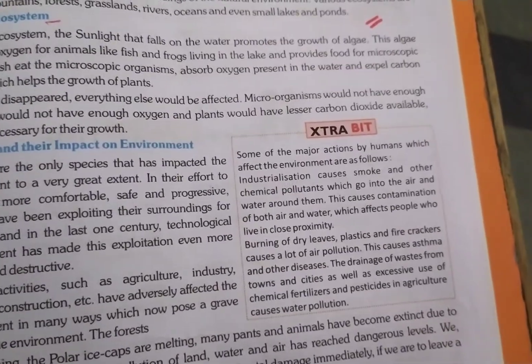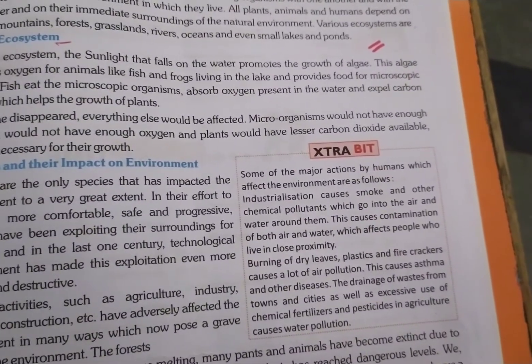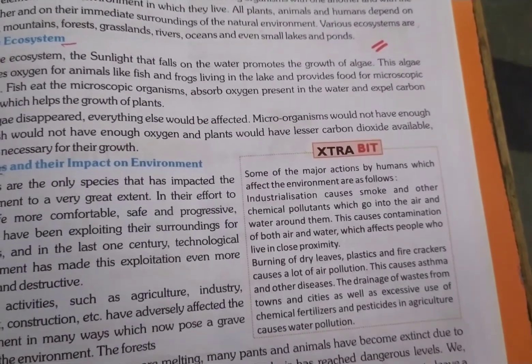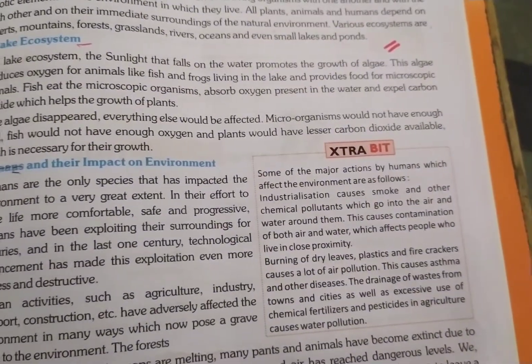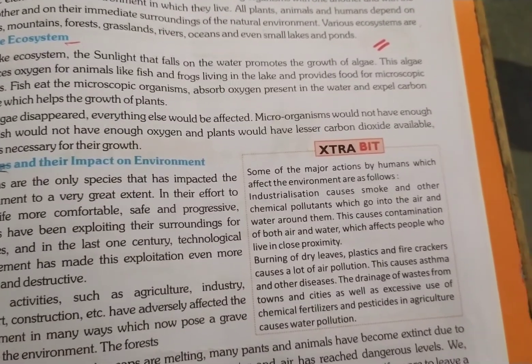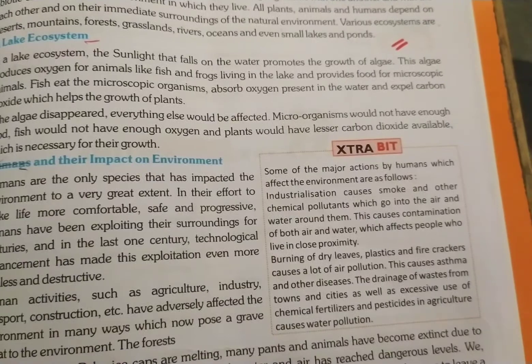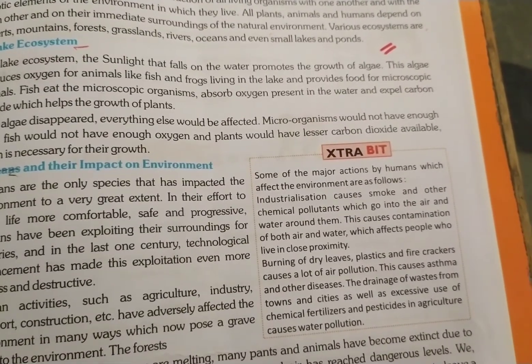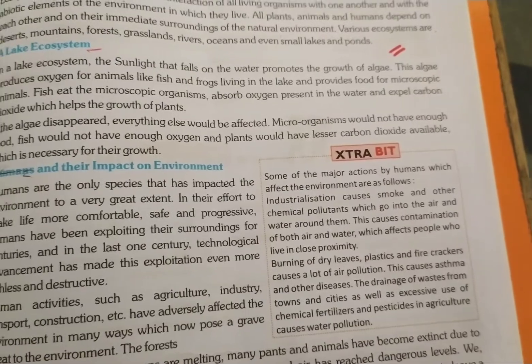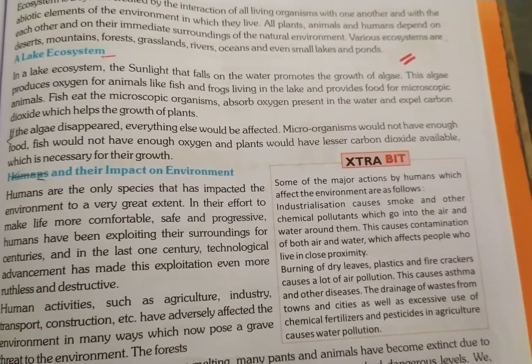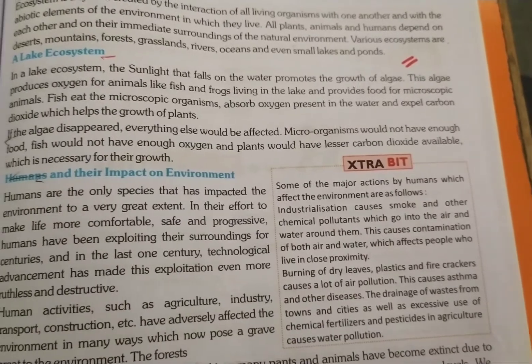A lake ecosystem. In a lake ecosystem, the sunlight that falls on the water promotes the growth of algae. The algae produce oxygen for animals like fish and frogs living in the lake and provides food for microscopic animals. Fish eat the microscopic organisms, absorb oxygen, and plants would have less carbon dioxide available which is necessary for their growth.